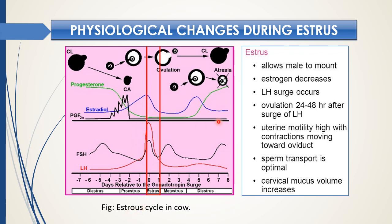In cow, it takes 24 to 48 hours for ovulation to occur after the surge of LH. Uterine motility will be high, with contractions moving towards the oviduct. Sperm transport will be optimal during this estrus phase, and cervical mucus volume increases — all facilitating sperm transport. This phase is followed by metestrus.